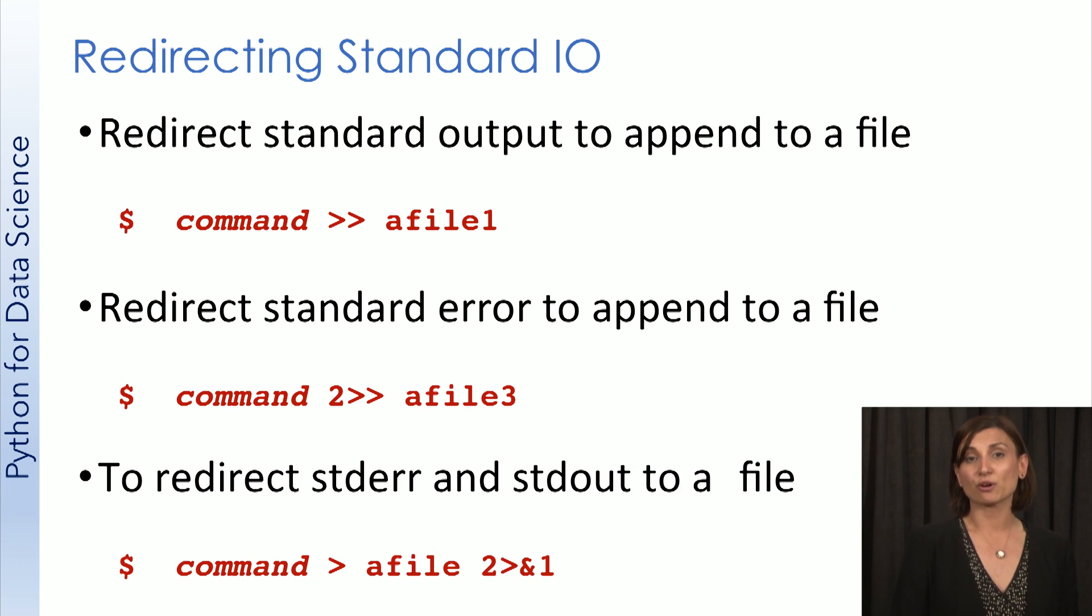Now we have a third command here. This one shows a way to redirect both standard out and error into the same file. The two greater than ampersand one means send fd2 output to the same place as the fd1 output, namely the file called a file.